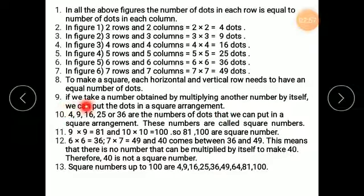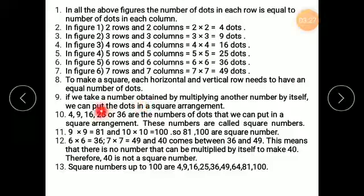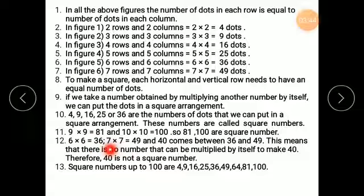So the rule is: if we take a number obtained by multiplying another number by itself, we can put the dots in a square arrangement — that is a square number. For example, 4 dots in rows and 4 dots in columns, if arranged, will form a square arrangement. So 6 sixes are 36, and 7 sevens are 49.